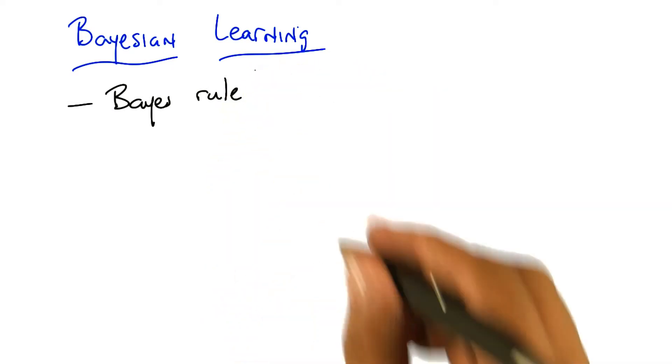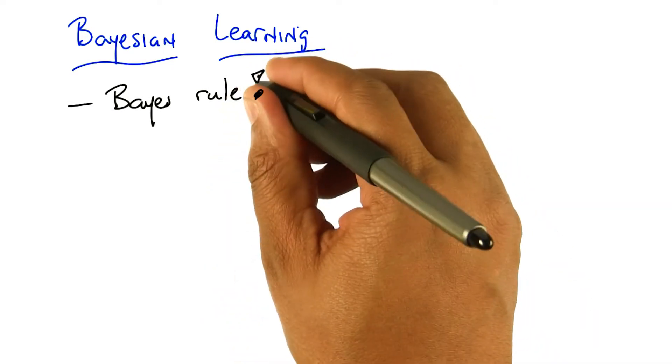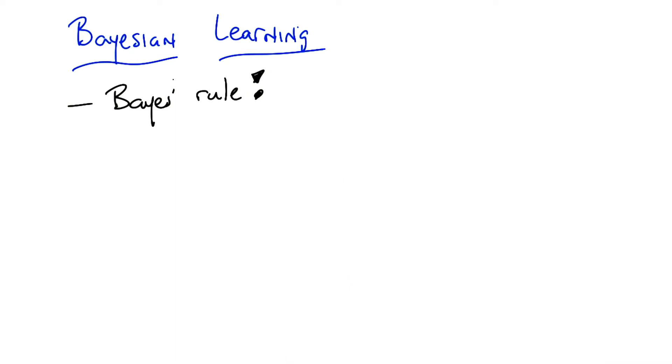We did Bayes' rule. We learned Bayes' rule. We even learned how to derive Bayes' rule. And it was super useful because it lets you swap kind of causes and effects.